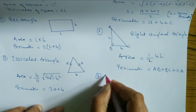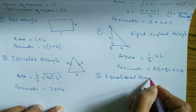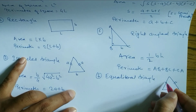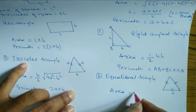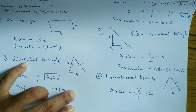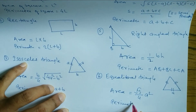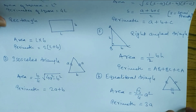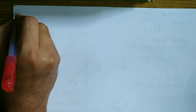Number 6 is the equilateral triangle. Equilateral triangle means all sides are equal. You can look here: all sides are equal — a, a, a. Area of equilateral triangle formula is (√3 / 4) × a². Perimeter formula is 3a, since a + a + a = 3a.